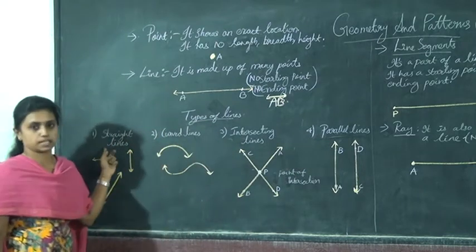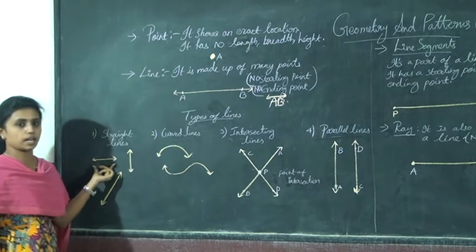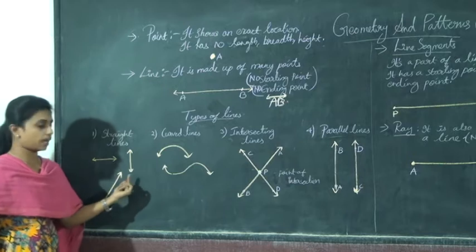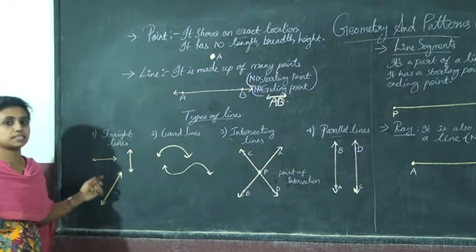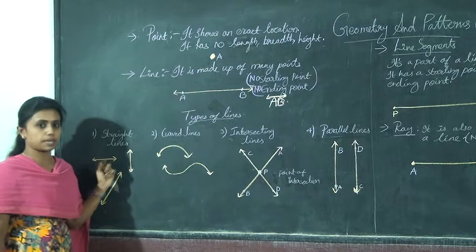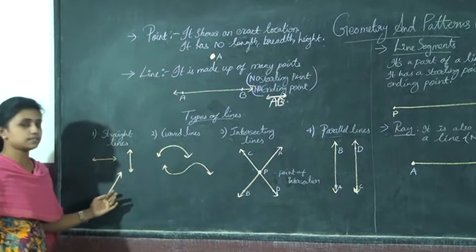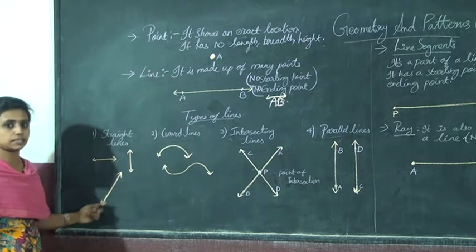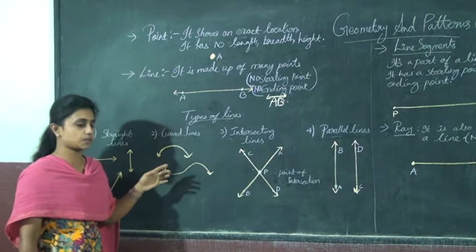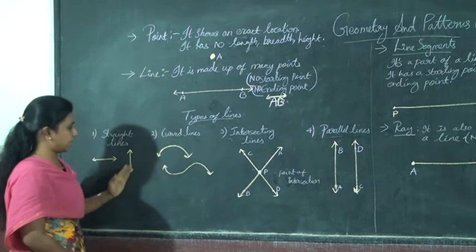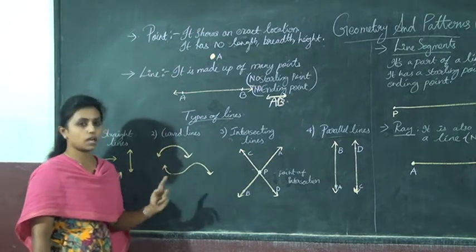First one is straight lines. Straight lines include vertical lines and slanting lines — horizontal, vertical and slanting lines. Next comes curved lines, which are different from straight lines.